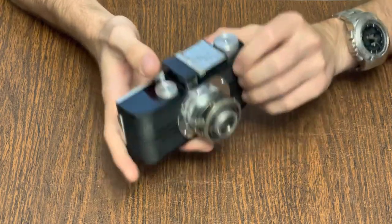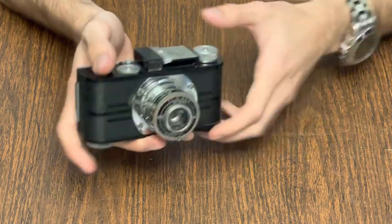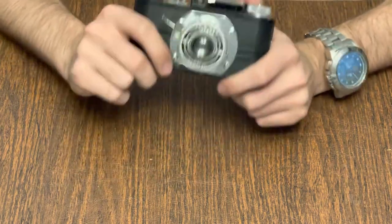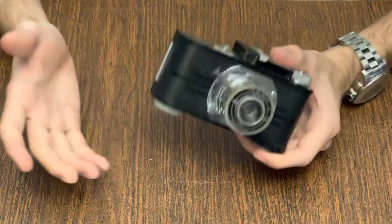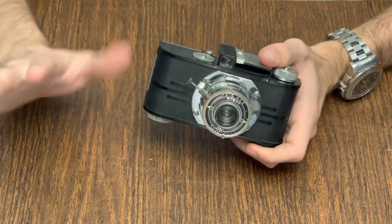After this is done, it is imperative that you press down on the button and wind on the film so you don't get a double exposure. There is no double exposure prevention on the A2F or any Argus A camera for that matter, except for the A4, but that's a separate design.